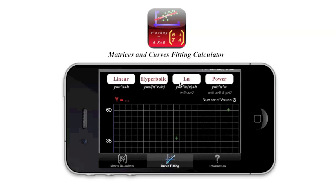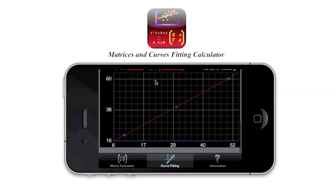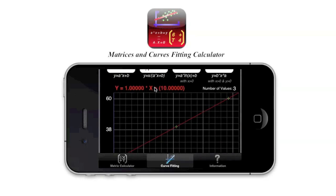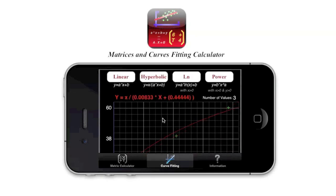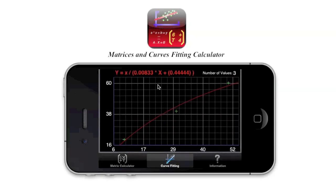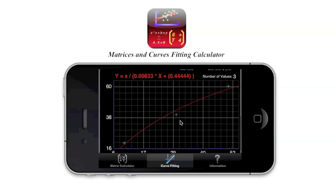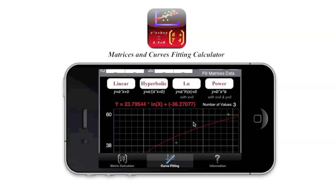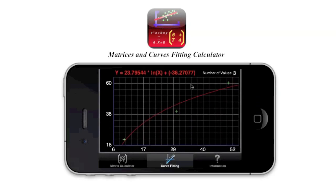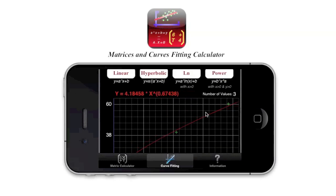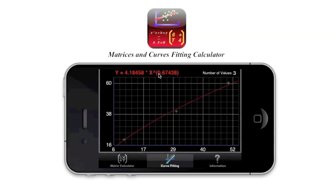So here we have four kinds of regression we can do. So the linear one this way. We have the equation here. We can also put the hyperbolic way. And here we have the hyperbolic equation. And then we have the logarithmic. And finally, we have the power mode. So this is basically the power. And we have the equation here.